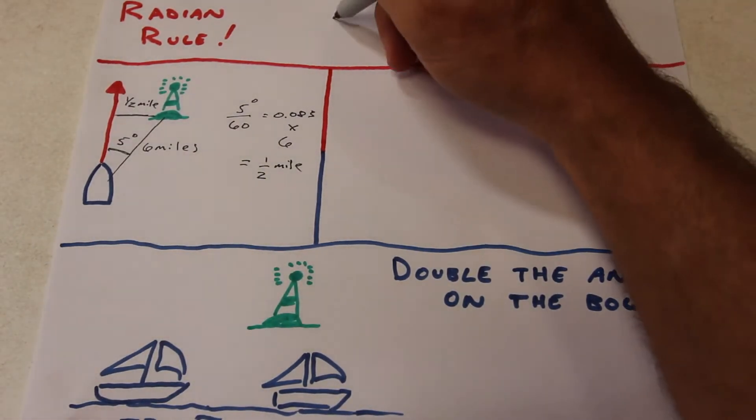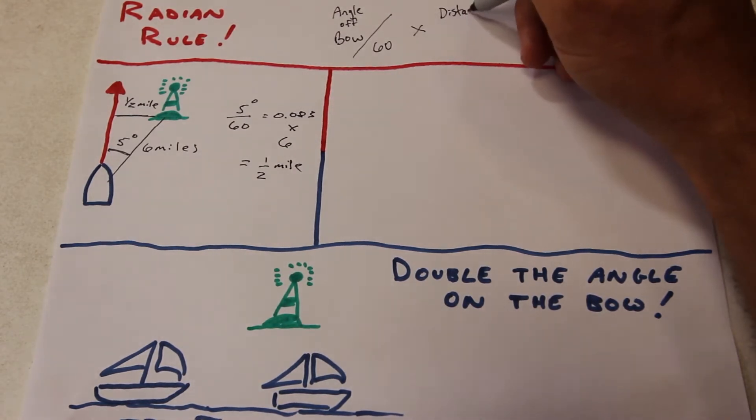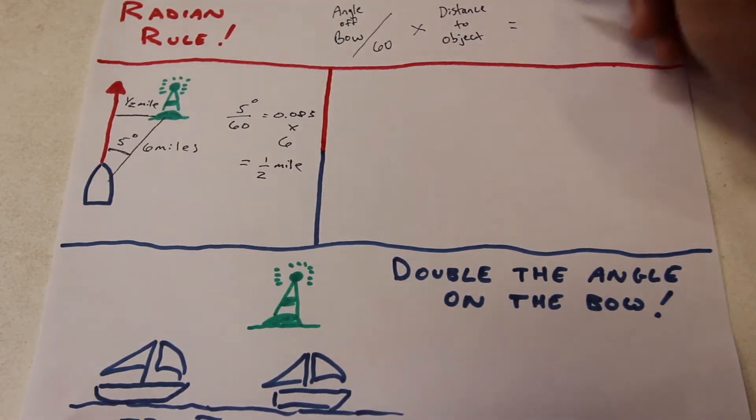So in general, the Radian Rule states that the angle off the bow divided by sixty times the distance measured equals the distance off at closest point of approach.